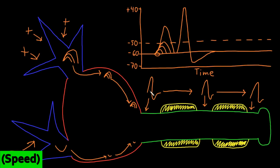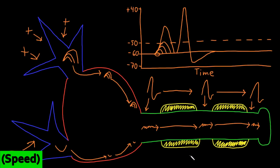With myelinated axons, the speed of conduction is not consistent along the axon. The action potential is conducted faster through the myelinated segments than through the gaps between them called the nodes of Ranvier. So the action potential travels a little slower through the trigger zone, then much more quickly through the myelinated segment, then a little more slowly through a node of Ranvier, then much faster through the next myelinated segment. This phenomenon is called saltatory conduction — from a Latin word for jumping — because the action potential appears to jump from node to node instead of having a smooth conduction along the axon.